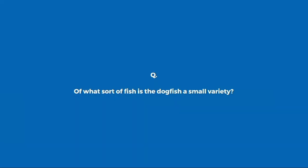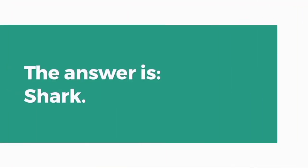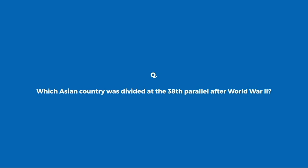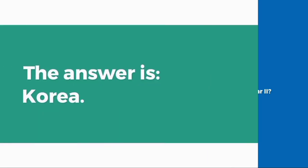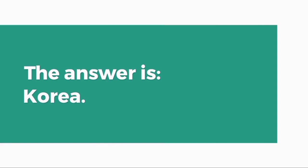Of what sort of fish is the dogfish a small variety? Shark. Which Asian country was divided at the 38th parallel after World War II? Korea.